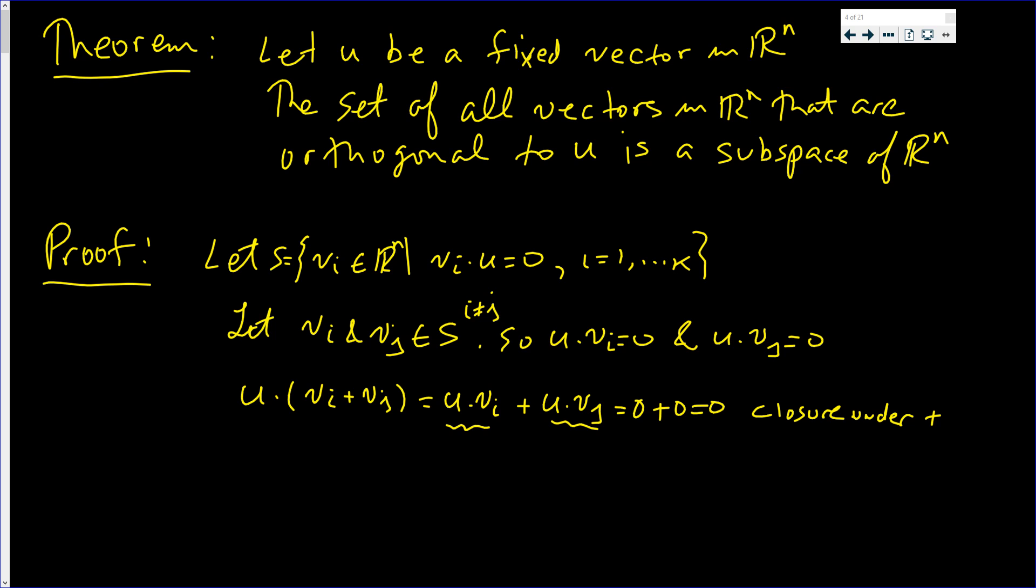So now what if you have U · (k·Vi)? Well, the dot product says we can pull the scalar in front. And I guess over here I should say let Vi and Vj be in S and k is a scalar. So this becomes k · (U · Vi). k times U · Vi is 0, so we got 0.